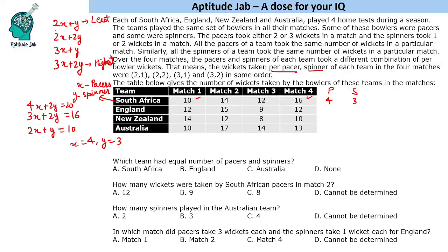Putting x = 4 and y = 2, we can verify: 2x + y = 10, 2x + 2y = 12, 3x + y = 14, and 3x + 2y = 16. So this gives the correct combinations. South Africa has 4 pacers and 2 spinners.